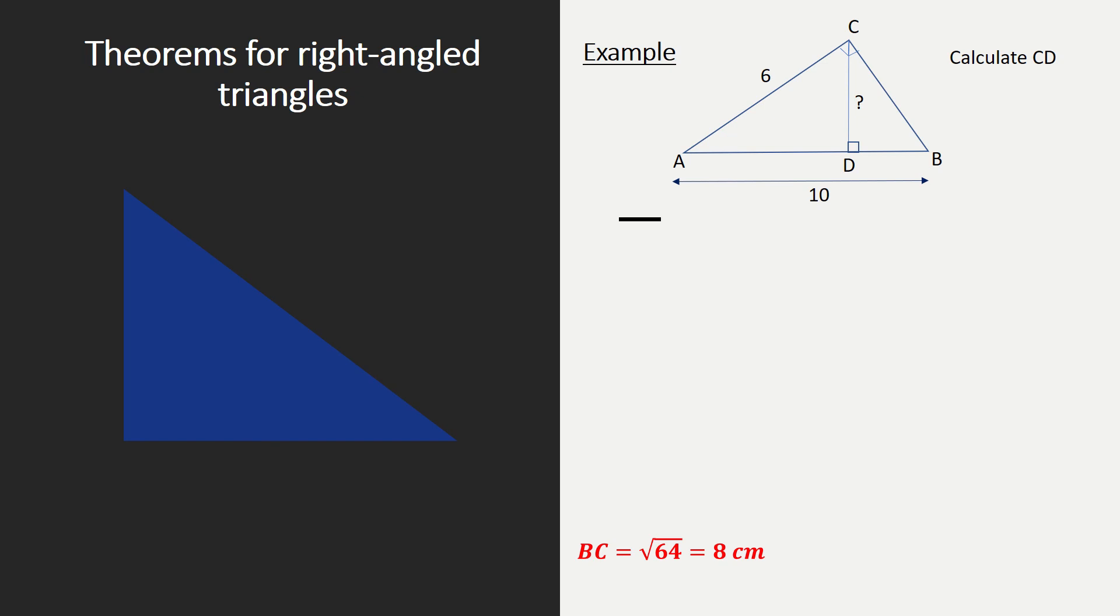Let's have a look at an example. I'm already going to give you kind of a spoiler alert that BC equals the square root of 64 equals 8 centimeters. But how did we do this?